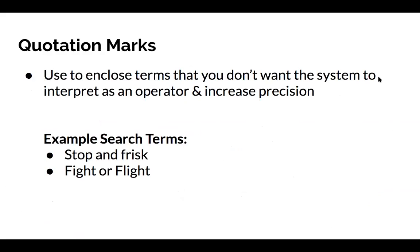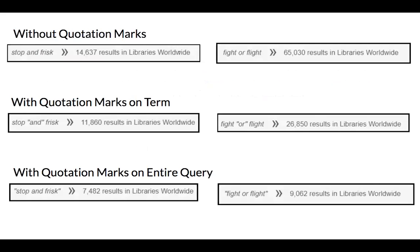Quotation marks are used to enclose a word you don't want the system to think is a Boolean operator, providing more precision in search results. This is useful if you're searching for terms that contain the words 'and,' 'or,' or 'not' within them. What I've observed in WorldCat is that quotation marks around those words and around the entire query reduces the number of results returned. The two phrases I tested are 'stop and frisk' and 'fight or flight.' As seen in snapshots from WorldCat, quotation marks narrow down the number of returned results, though the same relevant resources tend to appear first either way.